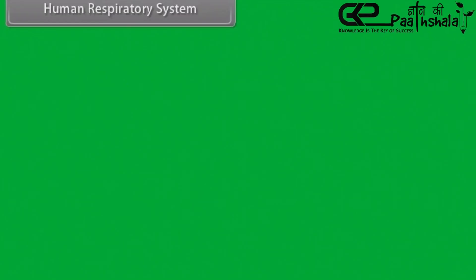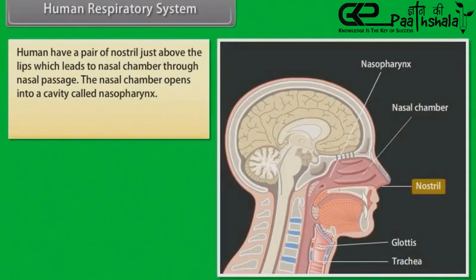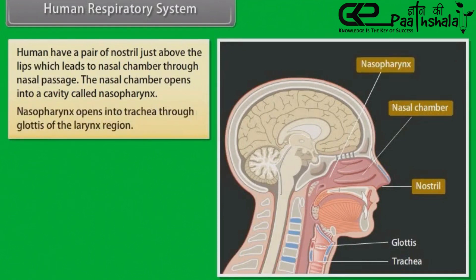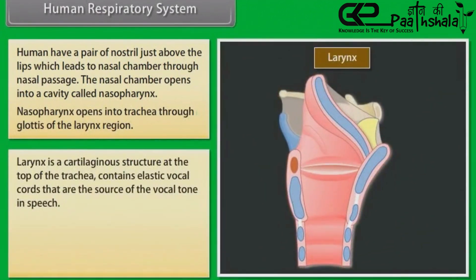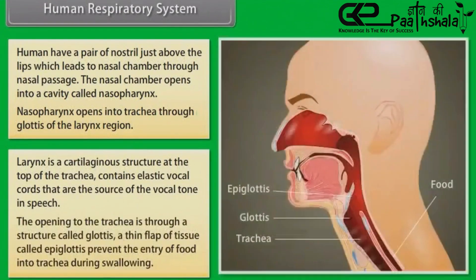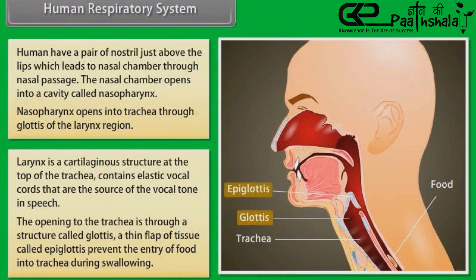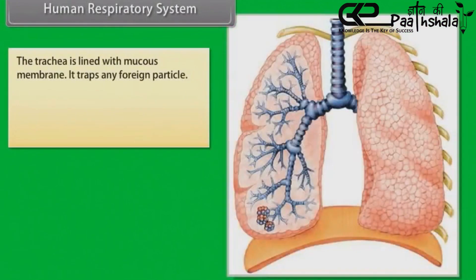Human respiratory system. Humans have a pair of nostrils just above the lips which leads to the nasal chamber through the nasal passage. The nasal chamber opens into a cavity called nasopharynx. Nasopharynx opens into the trachea through the glottis of the larynx region. Larynx is a cartilaginous structure. At the top of the trachea are elastic vocal cords that are the source of vocal tone in speech. The opening to the trachea is through a structure called glottis.